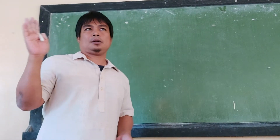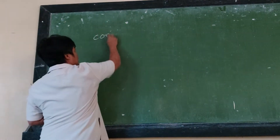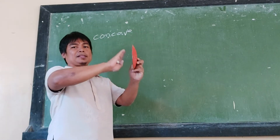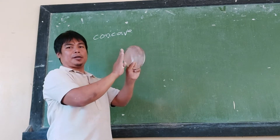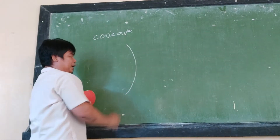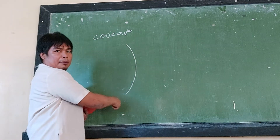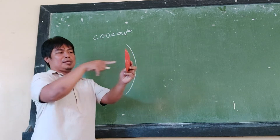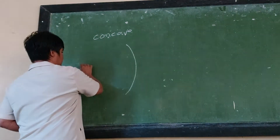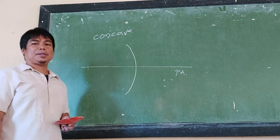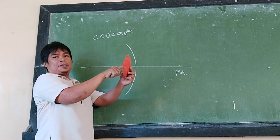Let us compare first a concave mirror and a convex mirror. This is the concave mirror — this is its front side and this is its back. If I have to sketch this concave mirror, I will draw it this way. There is an imaginary line passing through the center of this concave mirror — we call that the principal axis, denoted as PA.